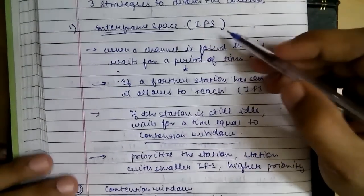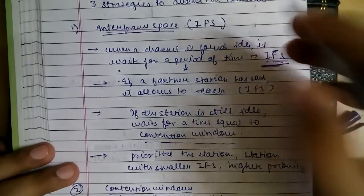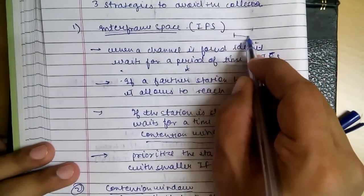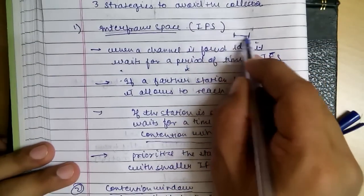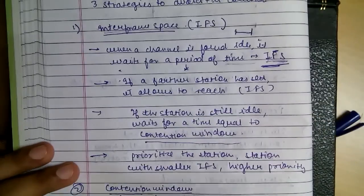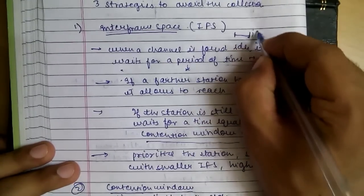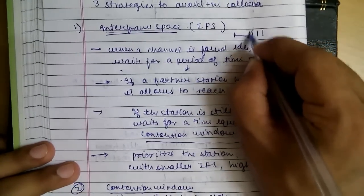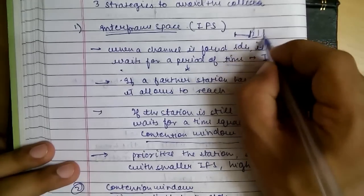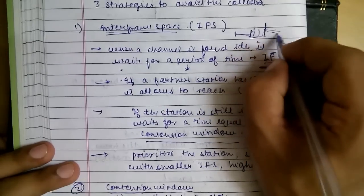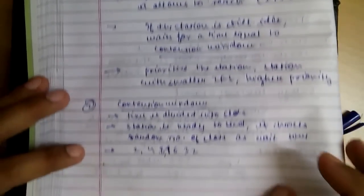So let's again focus on this: the station waits for some IFS time when it finds the channel idle. If the channel is idle still there, it waits for some random slots, that is the contention window, before sending its data.